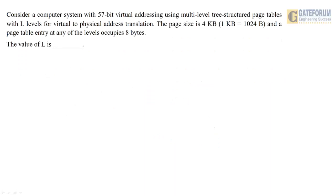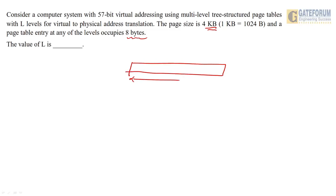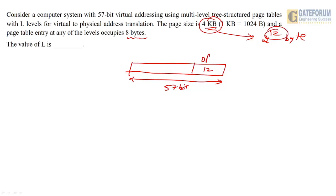The next question: a 57-bit virtual address uses a multi-level tree-structured page table for virtual-to-physical address translation. The page size is 4 KB and a page table entry at any level occupies 8 bytes. We need to find how many levels of paging are required. Page size 4 KB = 2^12 bytes, so 12 bits are required for the offset. The remaining 57 − 12 = 45 bits are used for paging levels.